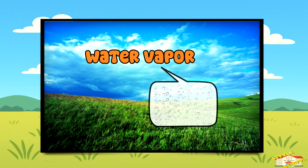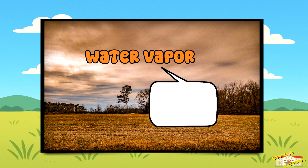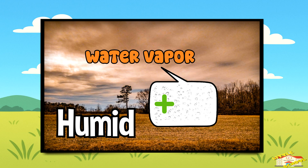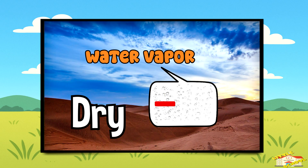So what is humidity? Humidity means how much water vapor is in the air. If the air has lots of water vapor, we say it's humid. If the air has little water vapor, we say it's dry.